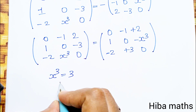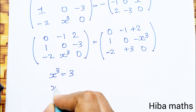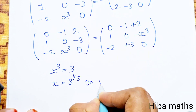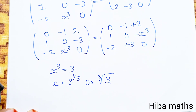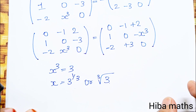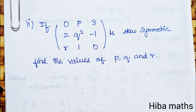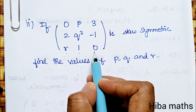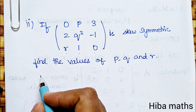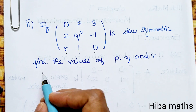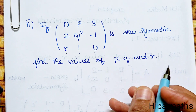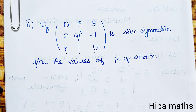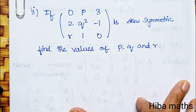X³ is equal to 3. Therefore X is equal to 3 to the power 1 by 3, which is the cube root of 3. As per the textbook, the answer is 3^(1/3). This completes the first subdivision.